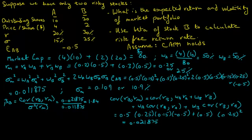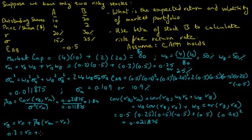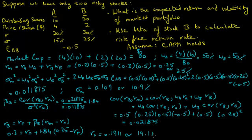Now, how do we calculate the risk-free return rate? We know that the capital asset pricing model holds, so the expected return on stock B equals the risk-free rate plus the beta of stock B times the expected return on the market portfolio minus the risk-free rate. We know the return on stock B is 30%, the beta of stock B is 1.84, and the return on the market portfolio is 25%. Solving for RF, we get RF equal to 0.1911, or 19.11%.